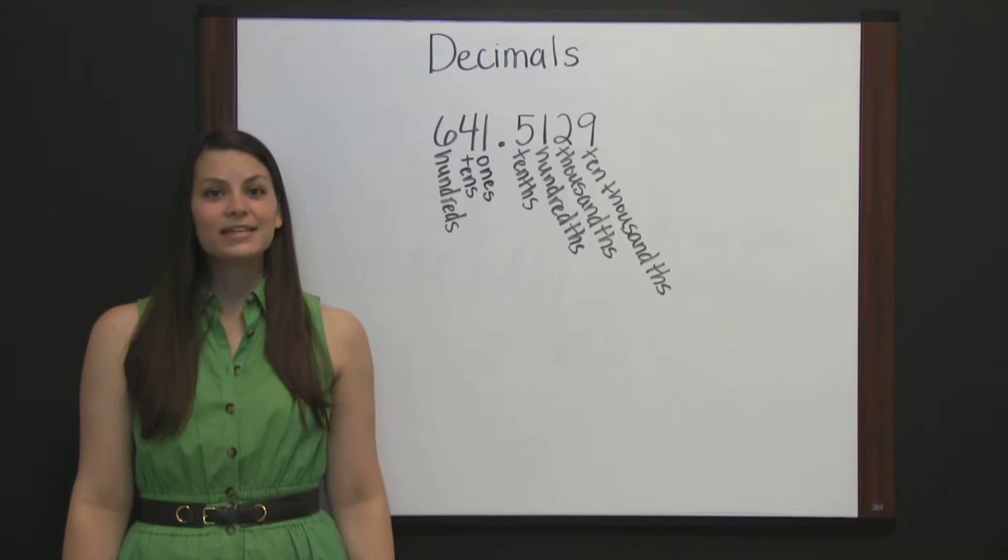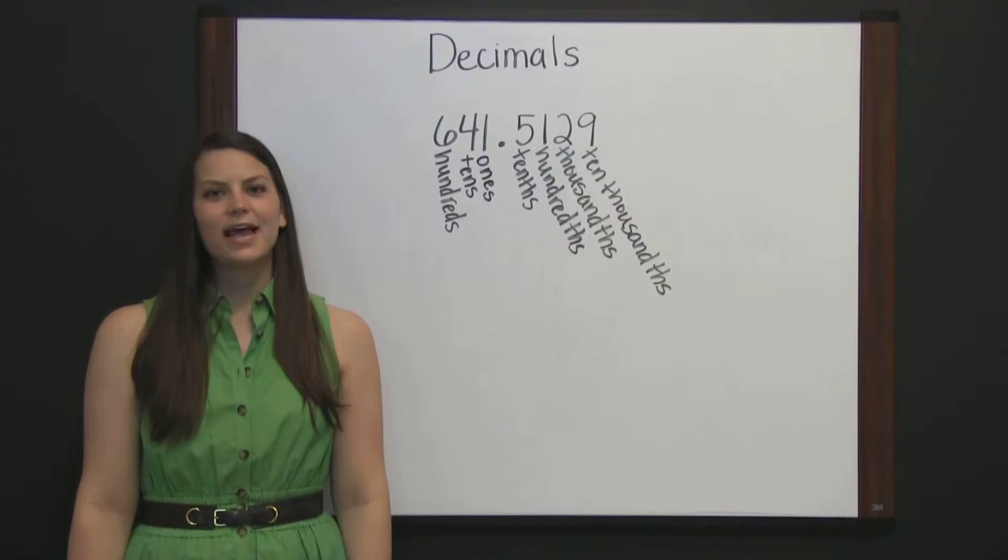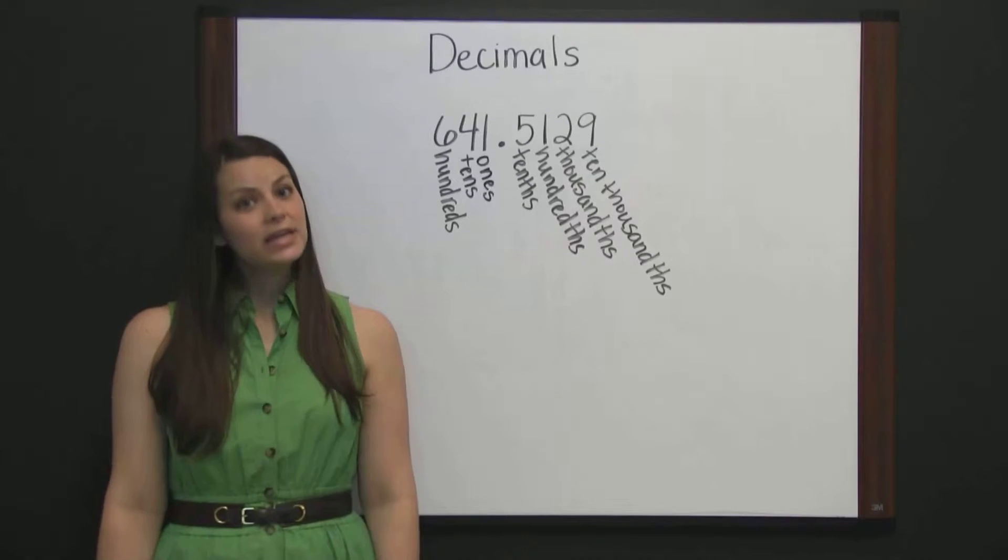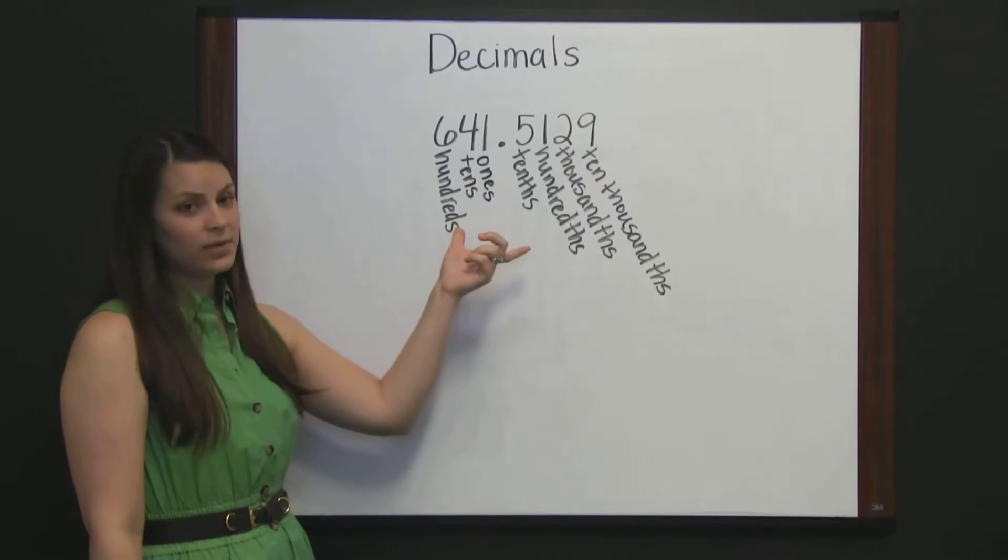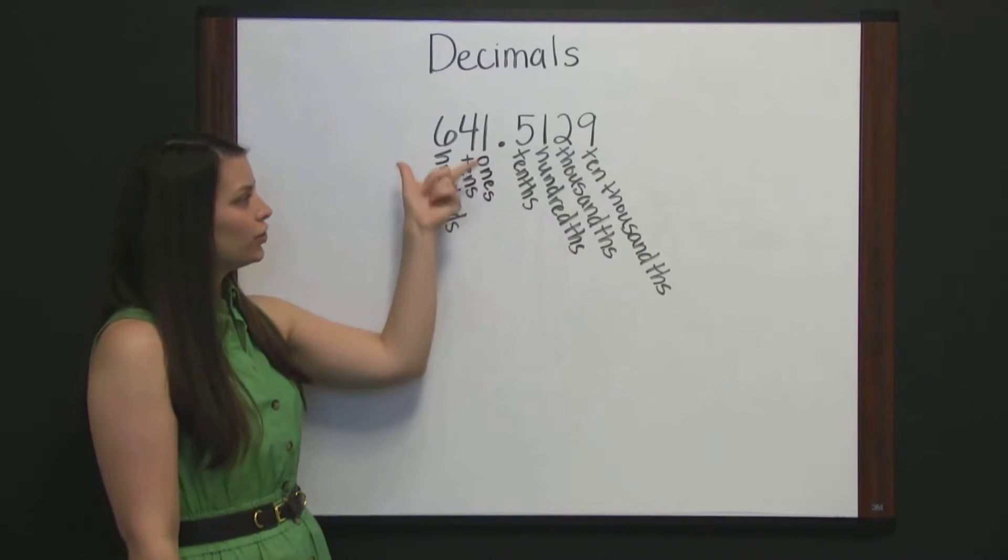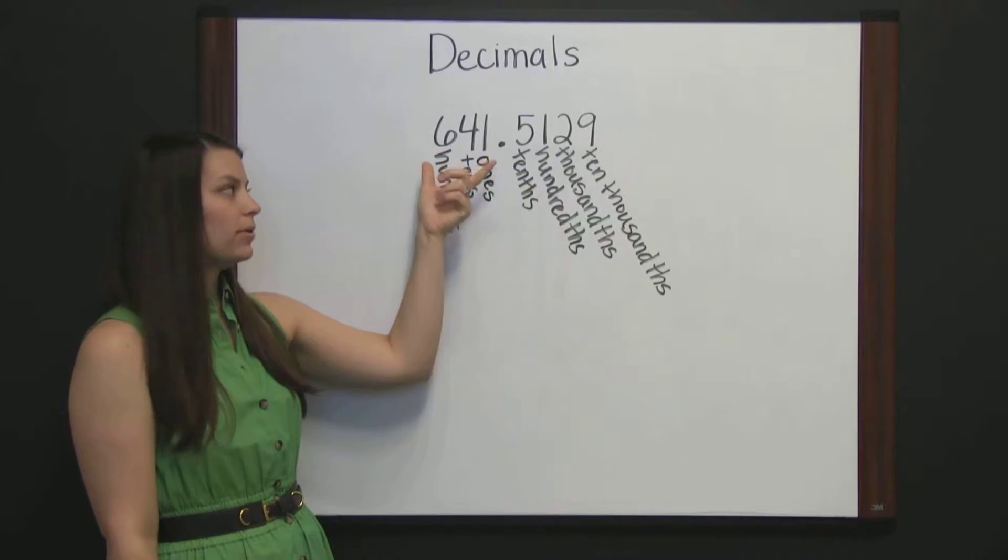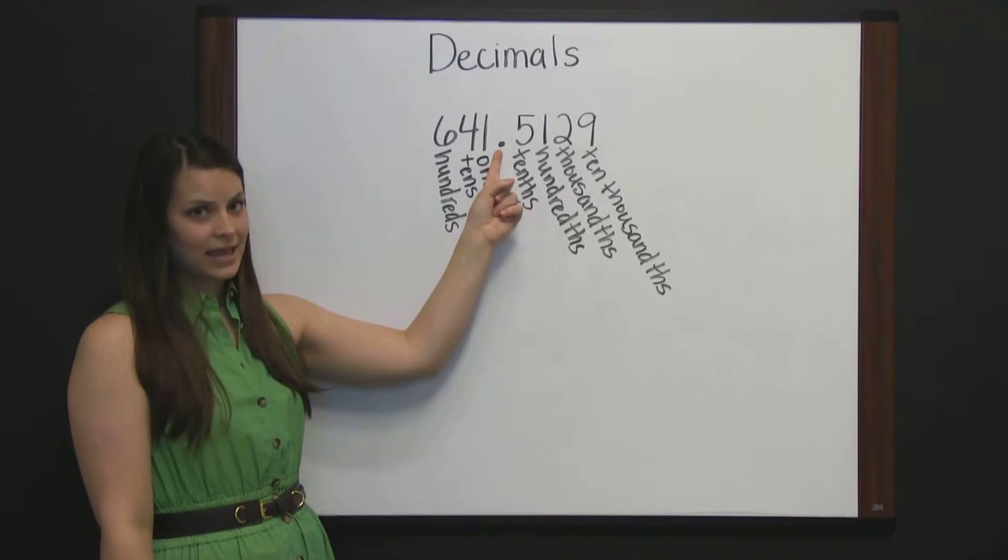Decimals. Decimals use place value to represent an amount. To read a decimal, like we have here, first read the number to the left as a whole number, followed by and,